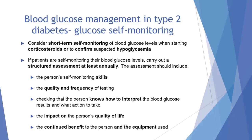If a patient is self-monitoring, we should carry out a structured assessment at least annually. This assessment should include the person's self-monitoring skills, the quality and frequency of testing, checking that the person knows how to interpret the blood glucose results and what action to take, the impact on the person's quality of life, and the continued benefit of the equipment used.